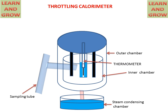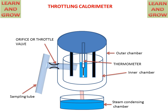This is the thermometer. This is the oil in this chamber. This is the throttle valve or orifice from which steam will be throttled and pass to the inner chamber of the throttling calorimeter. This is the pressure gauge for measuring pressure of the steam before going to the throttle valve.